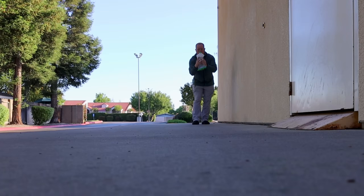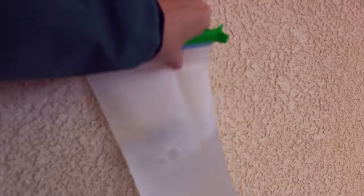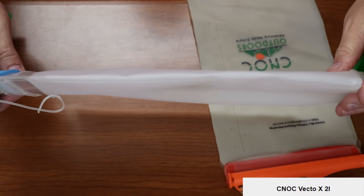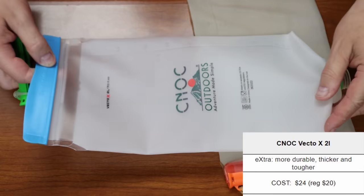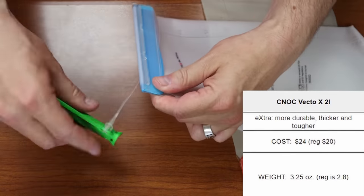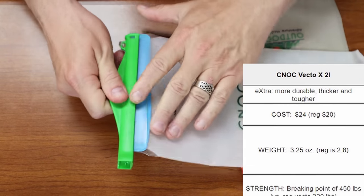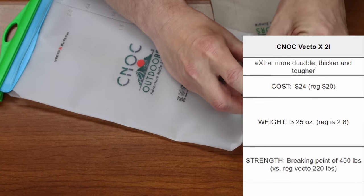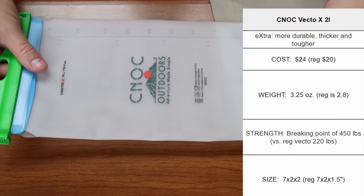The Vecto X was developed for people that need something a bit more rugged than the original, something that is going to stand up better over greater amounts of time. A quick comparison between the two shows that the Vecto X costs $24, whereas the regular Vecto is 20. The X is 3.25 ounces, whereas the regular is 2.8. The breaking point of the X is 450 pounds versus less than half of that at 220 with the regular Vecto. The X has a storage size of 7 by 2 by 2 inches, whereas the regular is 7 by 2 by 1 and a half inches.